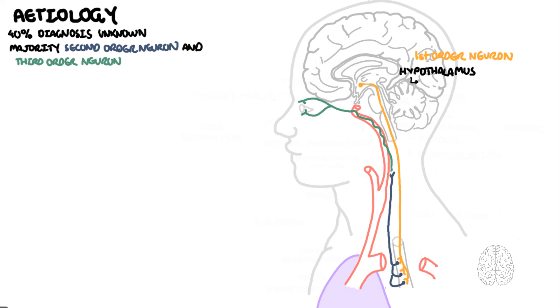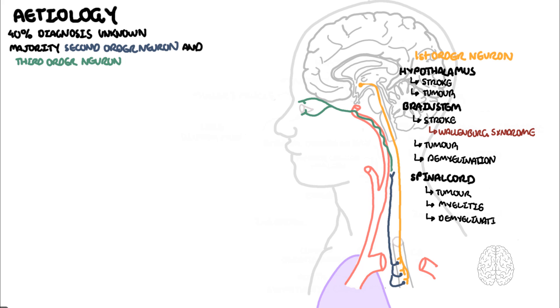Causes of first-order neuron lesion include hypothalamic strokes or tumors, brainstem strokes such as seen in Wallenberg syndrome, brainstem tumors, brainstem demyelination. Because the first-order neuron travels along the cervical spinal cord, spinal cord tumors, myelitis, demyelination of the spinal cord, and syringomyelia can also cause first-order neuron lesions.